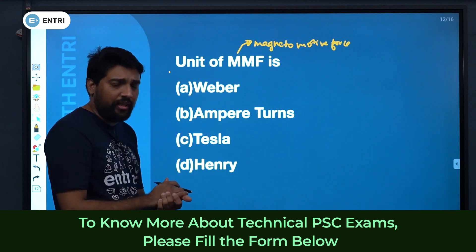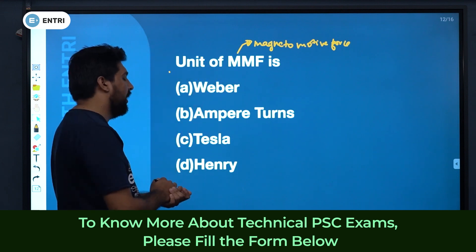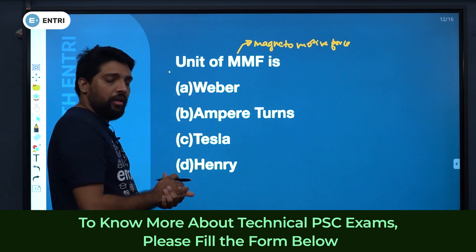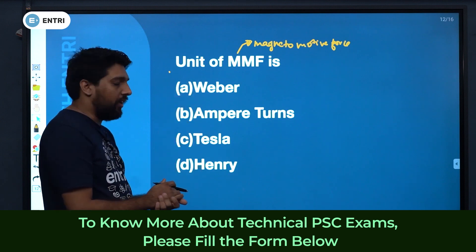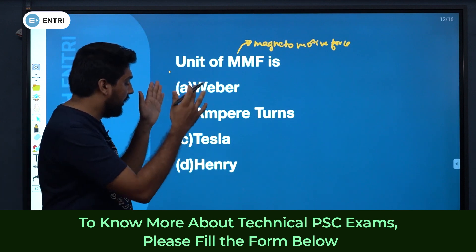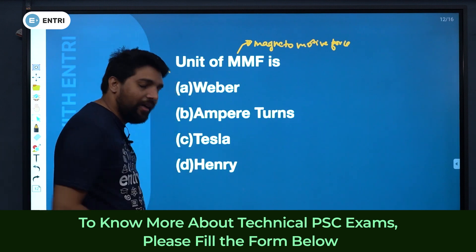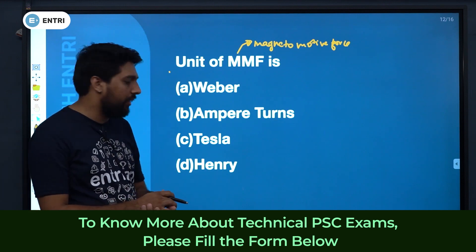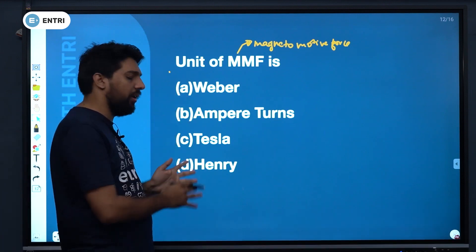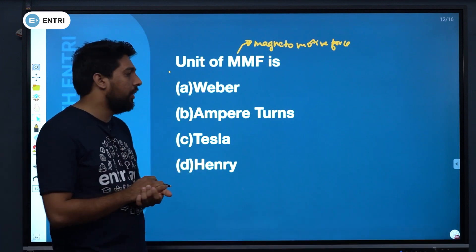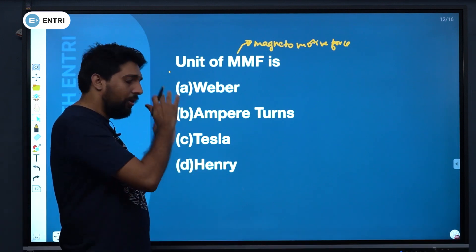The concept of MMF relates to its unit. There are different factors involved. You can see there are different quantities: Weber, Ampere, Tesla, and Henry — four quantities from which we will pick four.